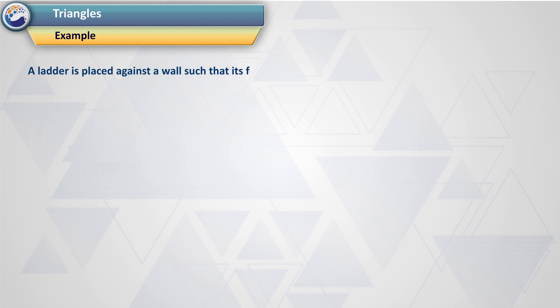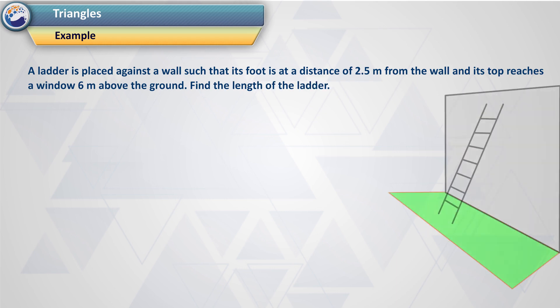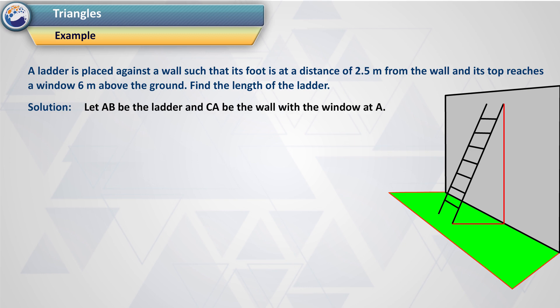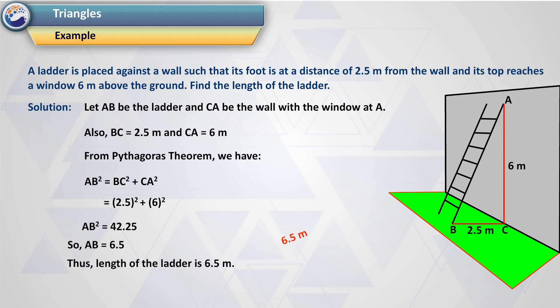Example 1. A ladder is placed against a wall such that its foot is at a distance of 2.5 metres from the wall and its top reaches a window 6 metres above the ground. Find the length of the ladder. Solution: Let AB be the ladder and CA be the wall with the window at A. BC = 2.5 m, CA = 6 m. By the Pythagoras theorem, AB² = BC² + CA². So AB = 6.5 m. Thus the length of the ladder is 6.5 metres.